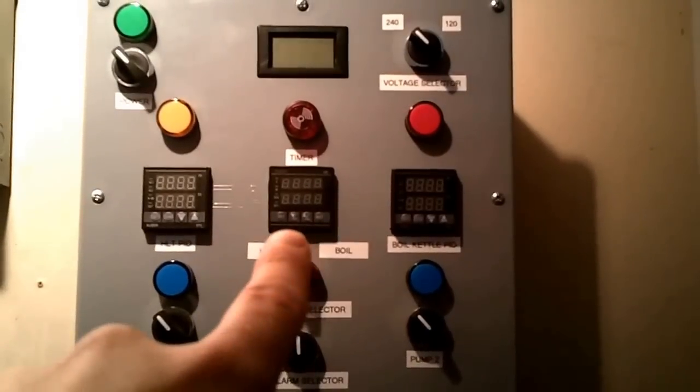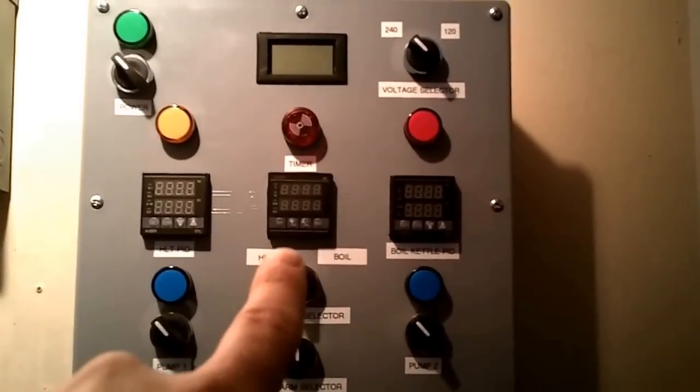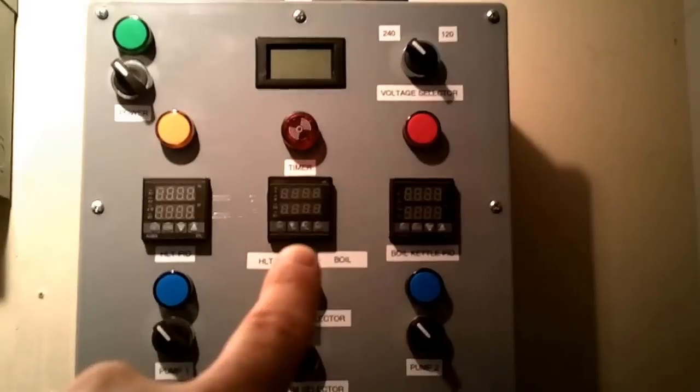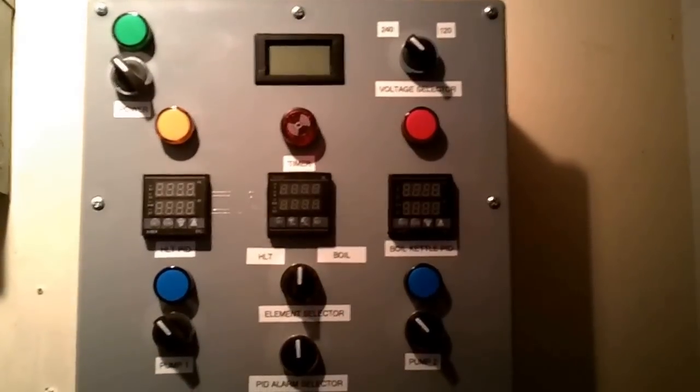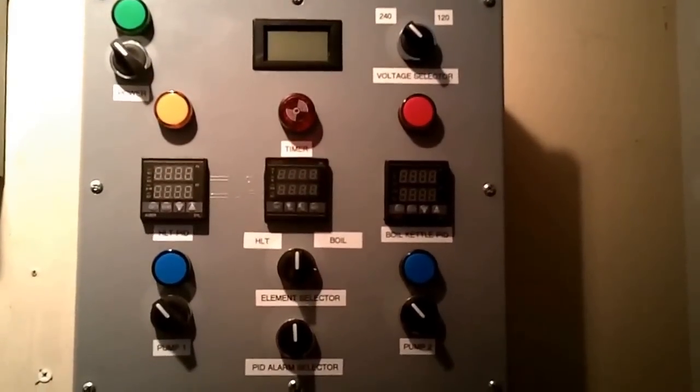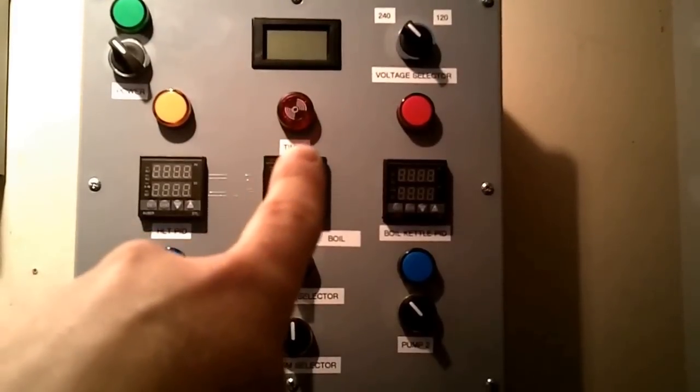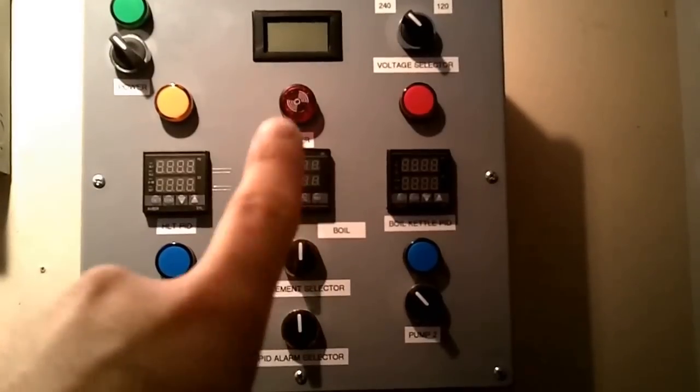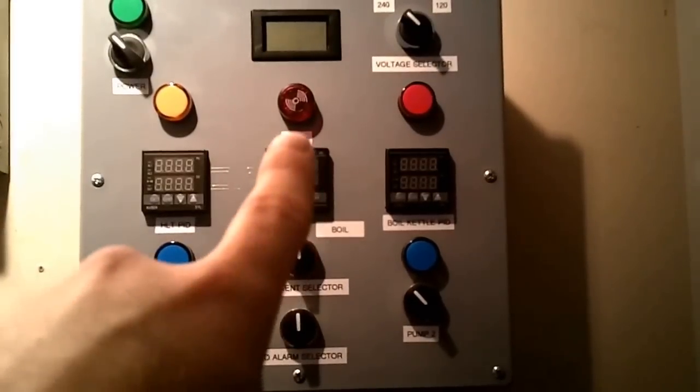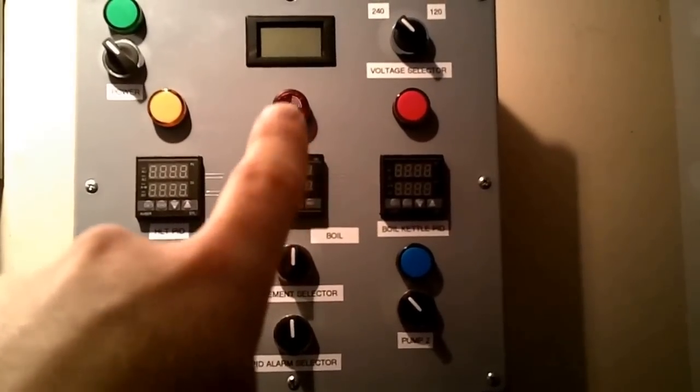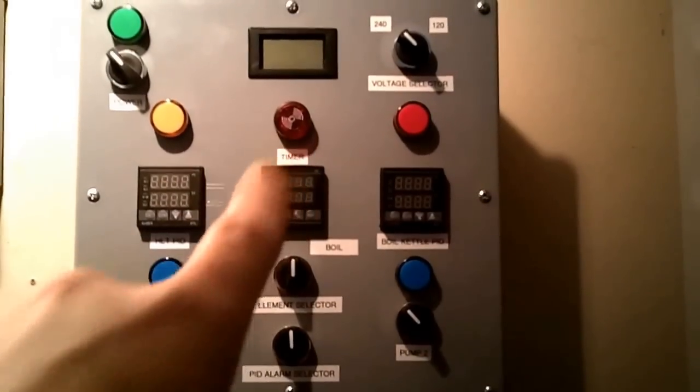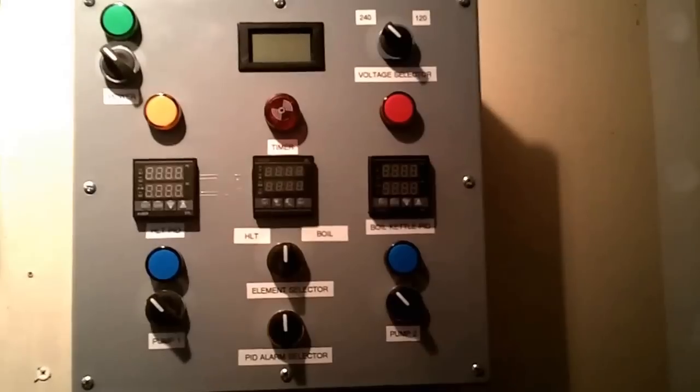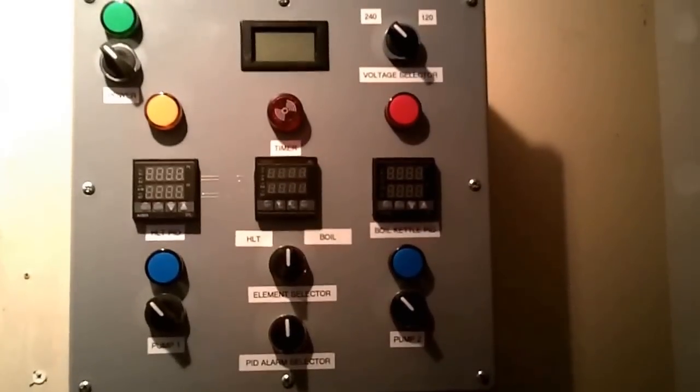In the center here I've got a timer and that timer is a multi-program timer so I can program multiple hop additions and then that is also linked to this alarm buzzer here directly above it. So each time the timer's up for a particular setting it'll not only light that up but it'll also beep at me to let me know the next hop addition needs to be made or that my mash is done or that my boil is done or whatever I happen to be doing at that moment.